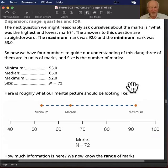So we know the minimum 53, we know the median 65, the maximum of 92, and we know that we have 72 data points in the variable.